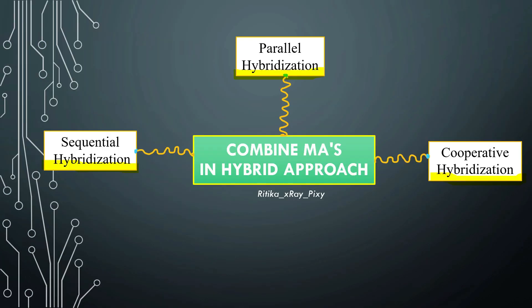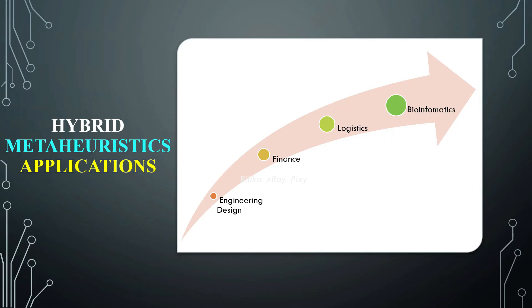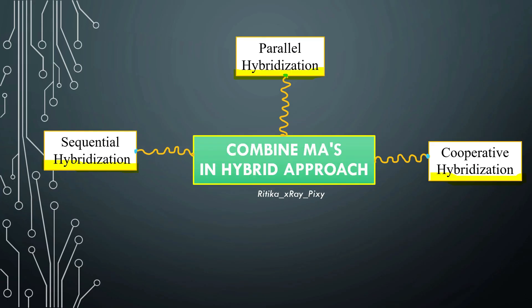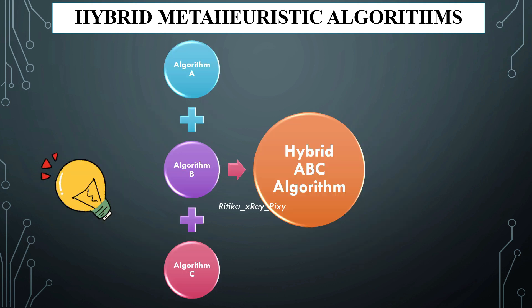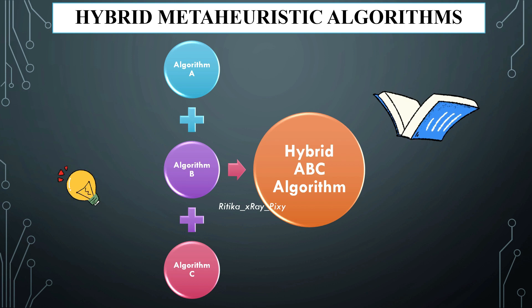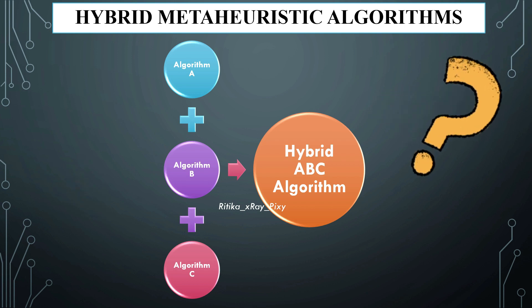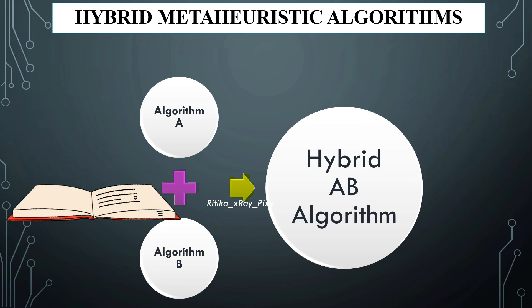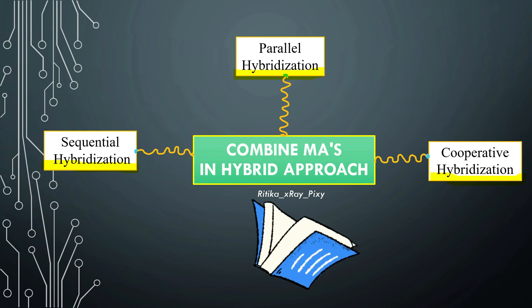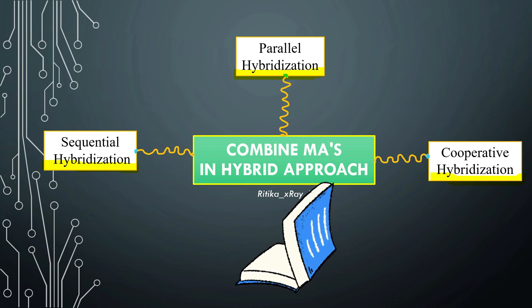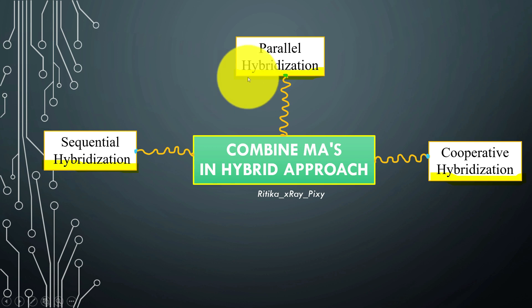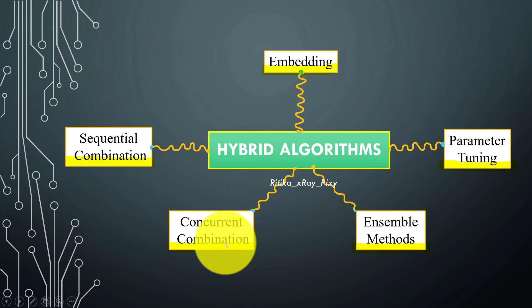Now we will understand hybrid algorithms and different approaches used for metaheuristic hybridization. A hybrid algorithm is a combination of two or more metaheuristics, combined to create a more powerful and effective algorithm. Different approaches include parallel hybridization, sequential hybridization, cooperative hybridization, concurrent combination, embedding, parameter tuning, and others.